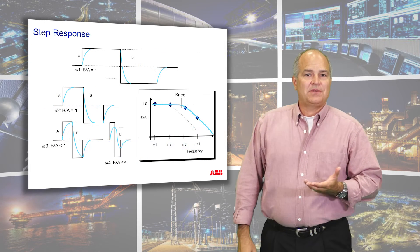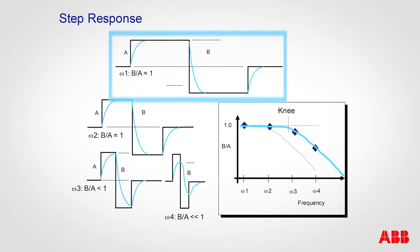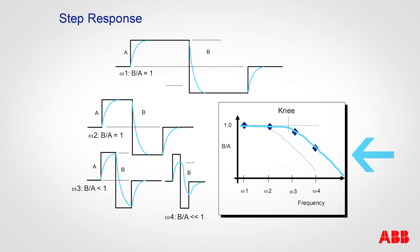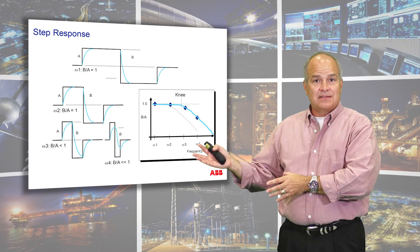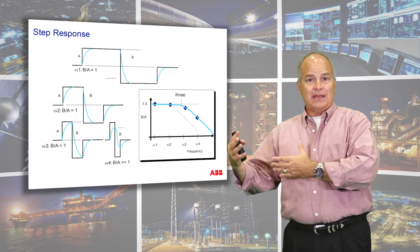Instead of a step change, what if we do a square wave? On this top one, you can see I changed the frequency of the square wave such that the process reached equilibrium before it changed directions. So you can see here that the ratio of the process to the input is one when the frequency is low enough. But then as I increase the frequency, I'm moving the concentration up and down and it attenuates all of it. So what we end up having is this frequency component — and what's interesting is a controller where we're changing the set point works exactly the same way.